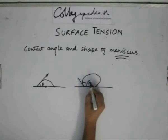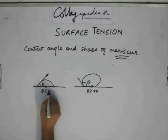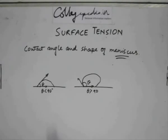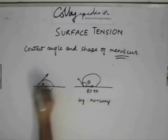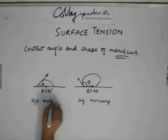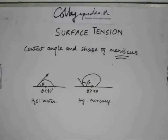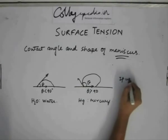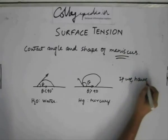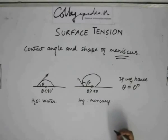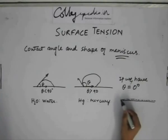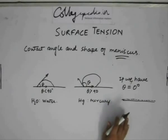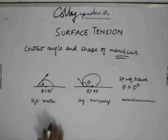These two tangents together give us the contact angle. Here theta is greater than 90 degrees, and here theta is less than 90 degrees. A typical example of theta greater than 90 is mercury; water gives theta less than 90. If theta equals 0 degrees, we get a slick or sheen of liquid spread throughout the solid plate.